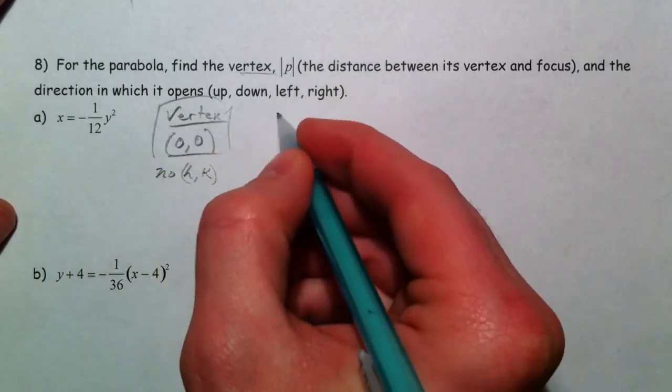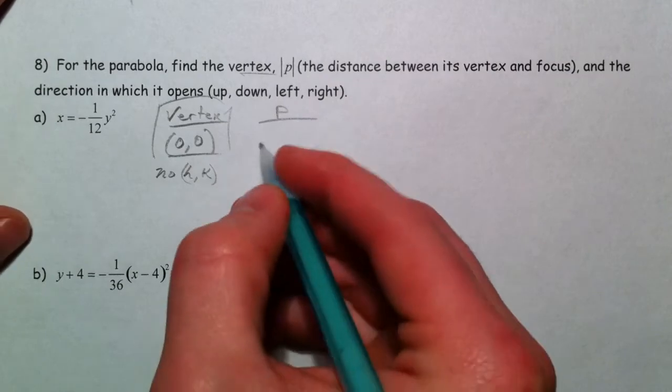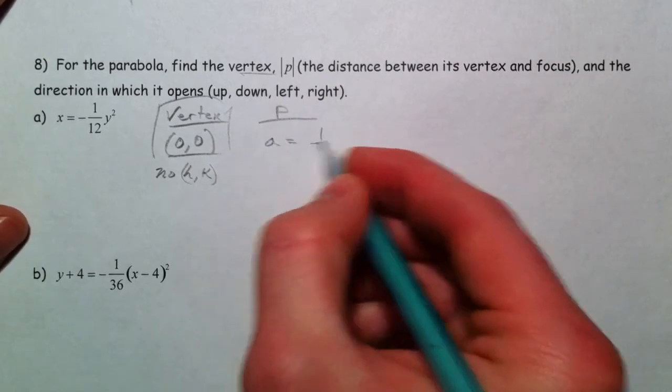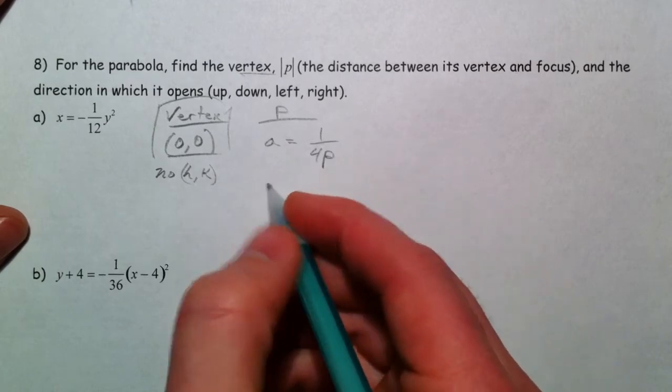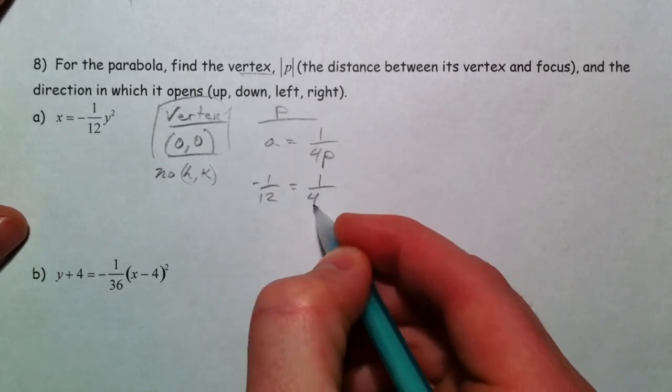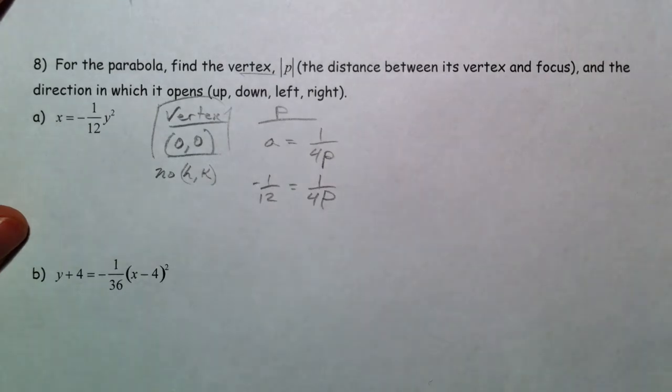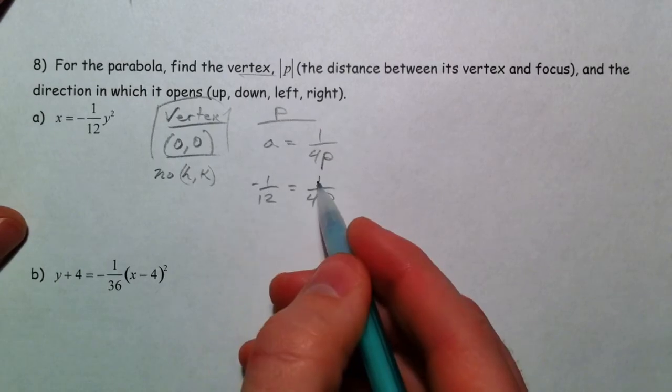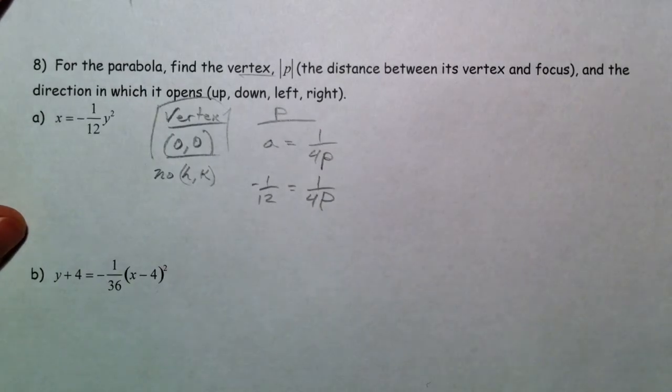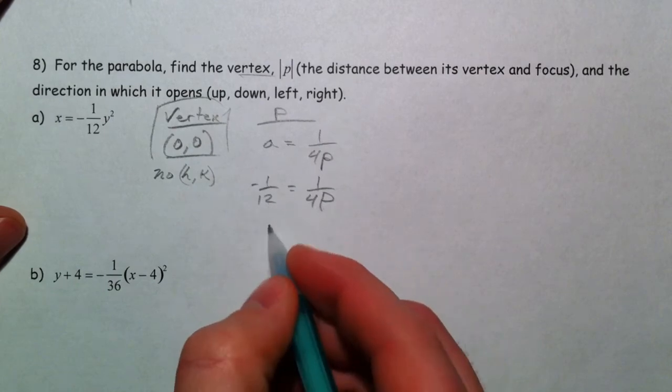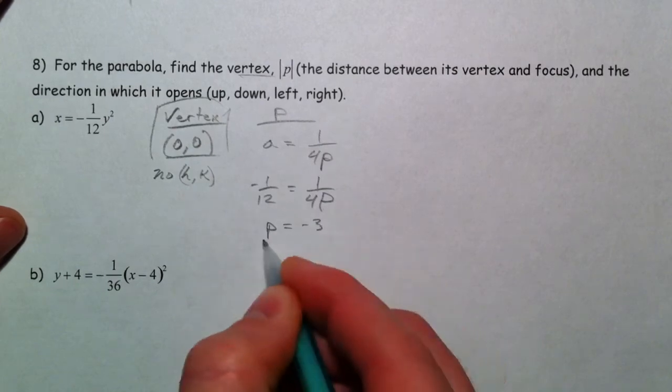The p stems from the fact that a equals 1 over 4p. So, negative 1 twelfth equals 1 over 4 times what? Well, logically, you can look at this. And you can either cross multiply. Or you can think, okay, well, 4 times what p value will get me negative 12? p has to equal negative 3.